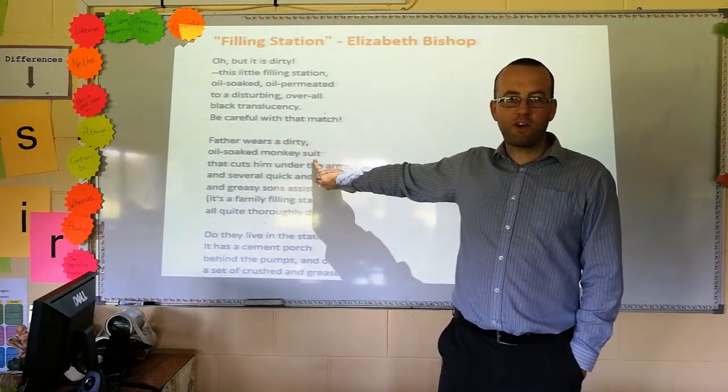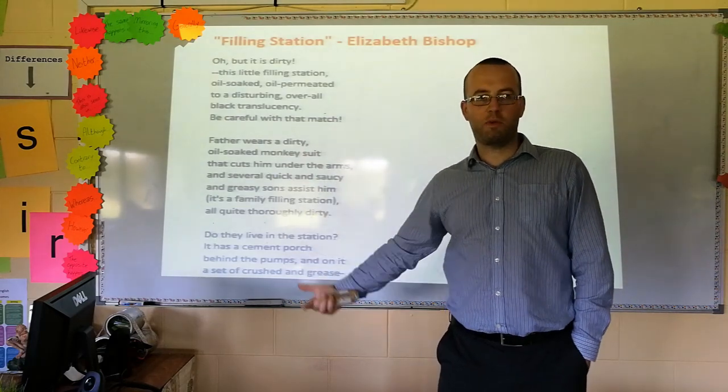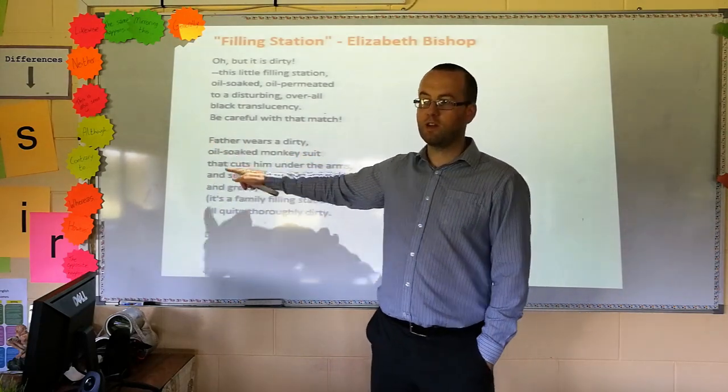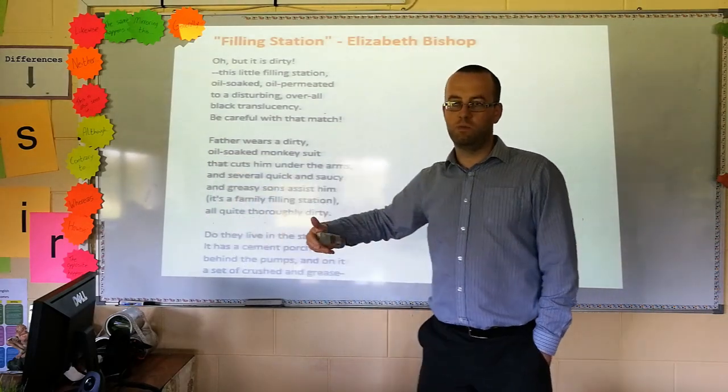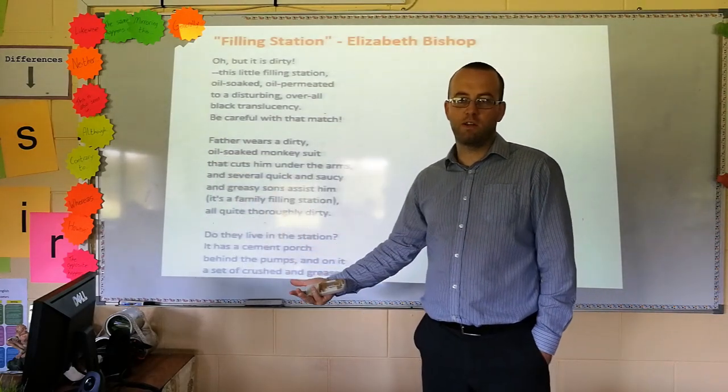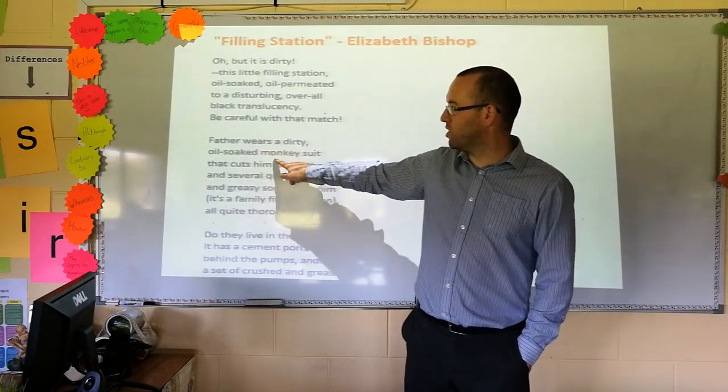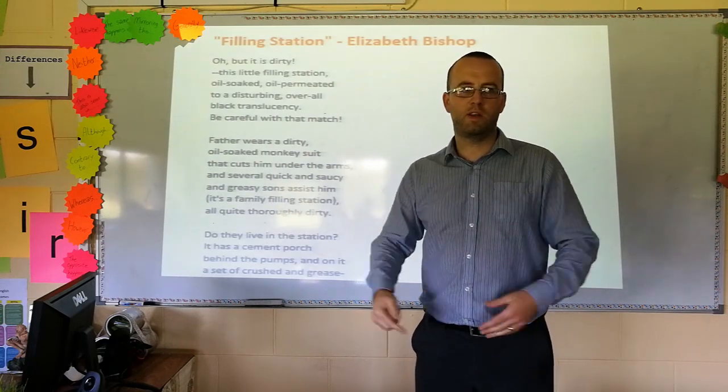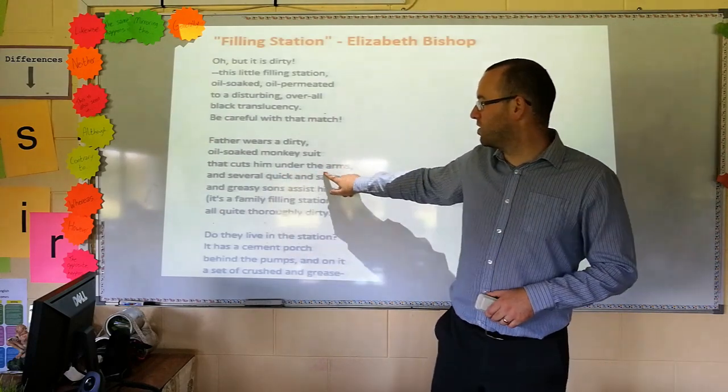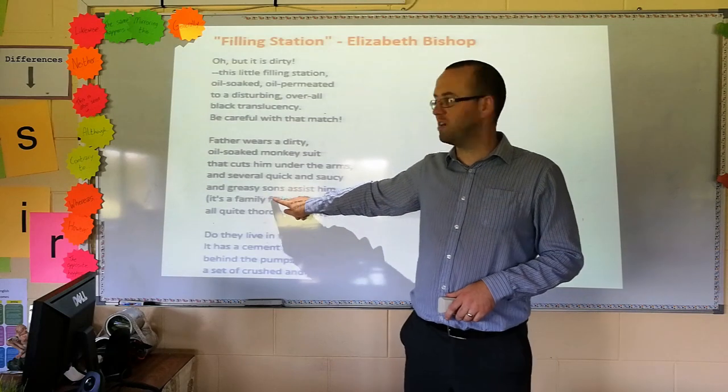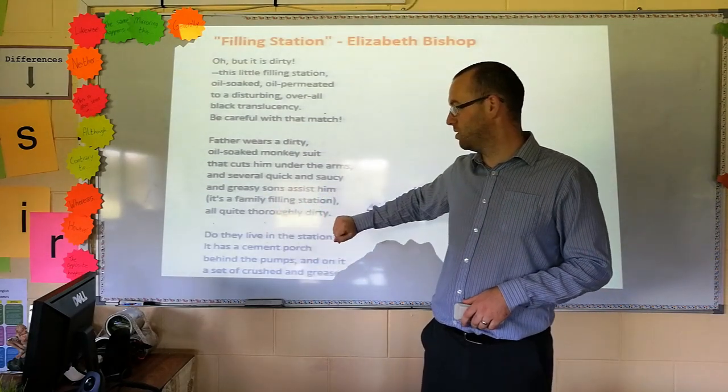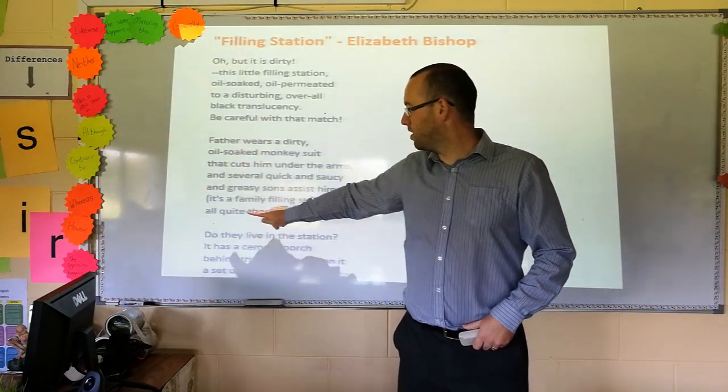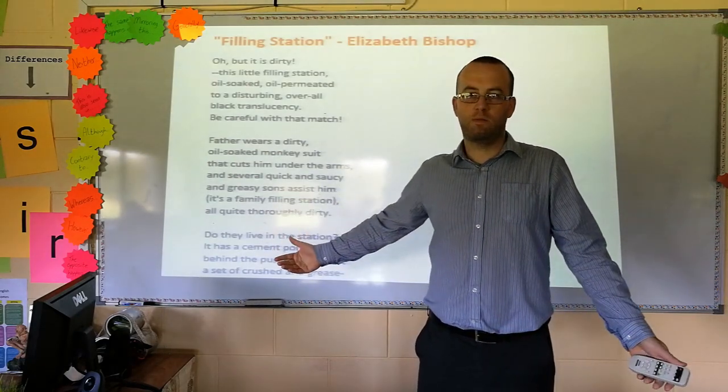Oh, there's a humorous tone there at the end. Second verse continues and describes some of the people that can be found in this place. Father wears a dirty, oil soaked monkey suit. That's the third time, you guys have noticed this already, that's the third time the word oil has been used. She's really, really emphasizing the filth, the dirt of this place. Father wears a dirty oil soaked monkey suit. You know, that's kind of one of those overall things that people wear sometimes when they're working, maybe farming or doing a dirty job. It cuts them under the arms and several quick and saucy and greasy sons assist them. It's a family filling station. She's painting a picture here of the family that work on this farm. You'll notice, of course, that they're all men. Father and the sons. No sign of a female touch at all.